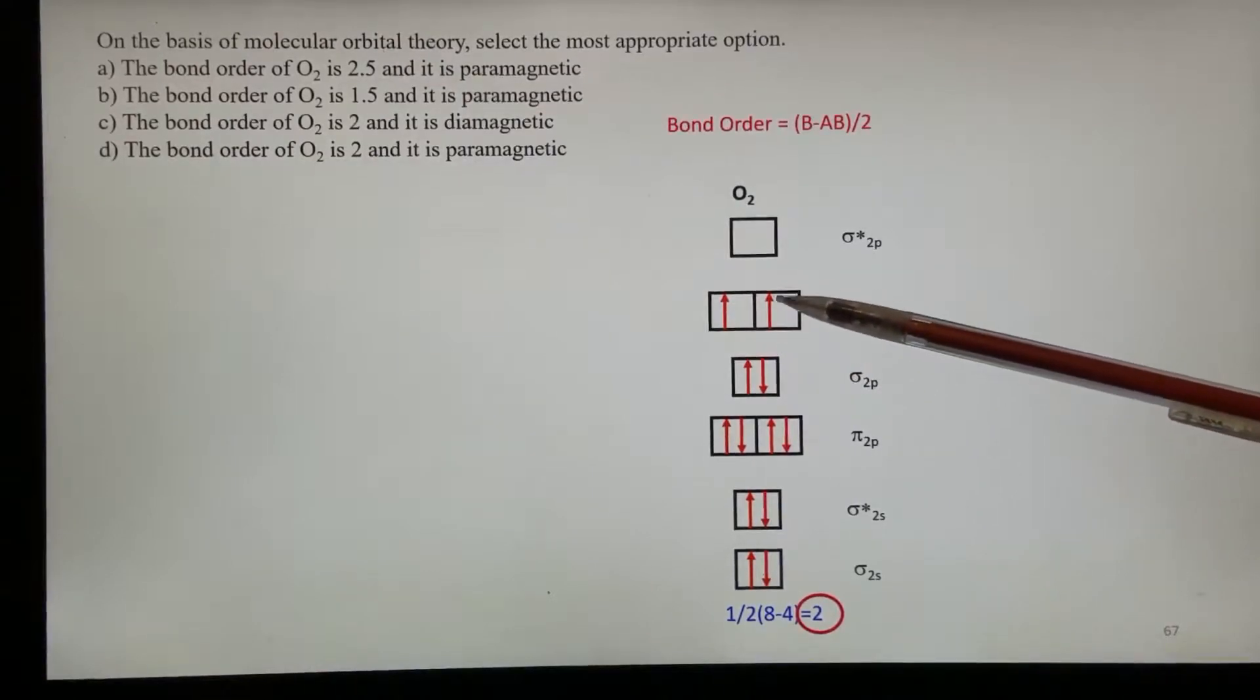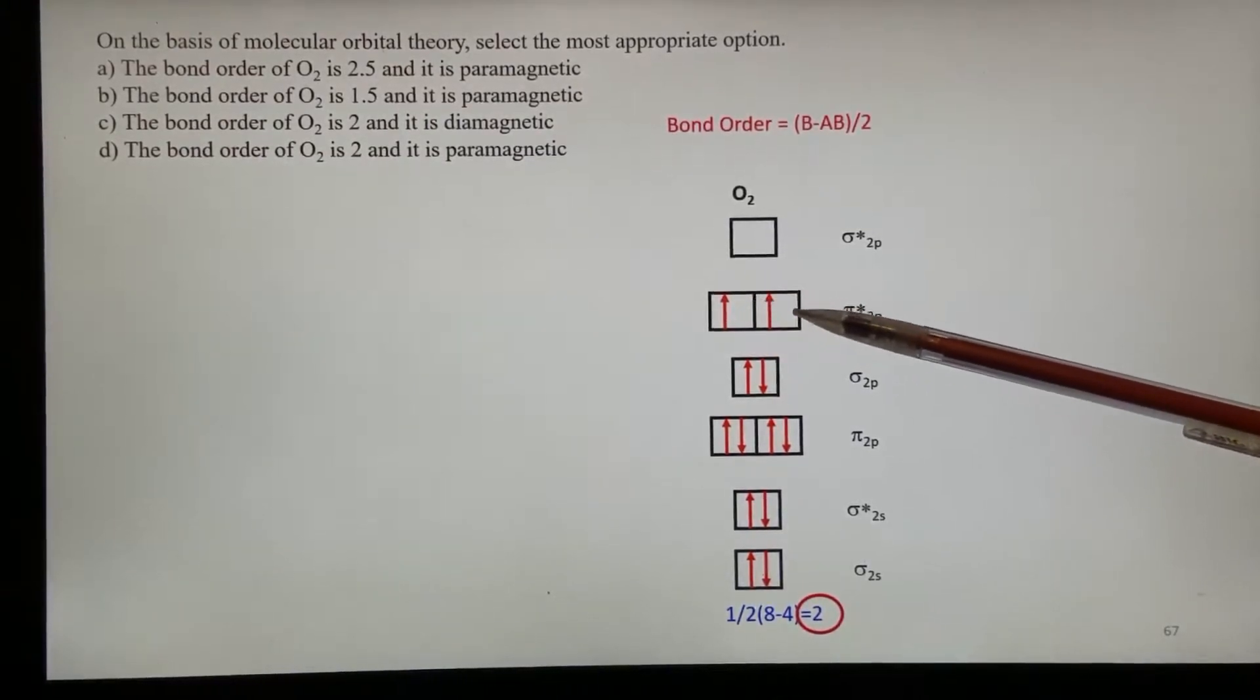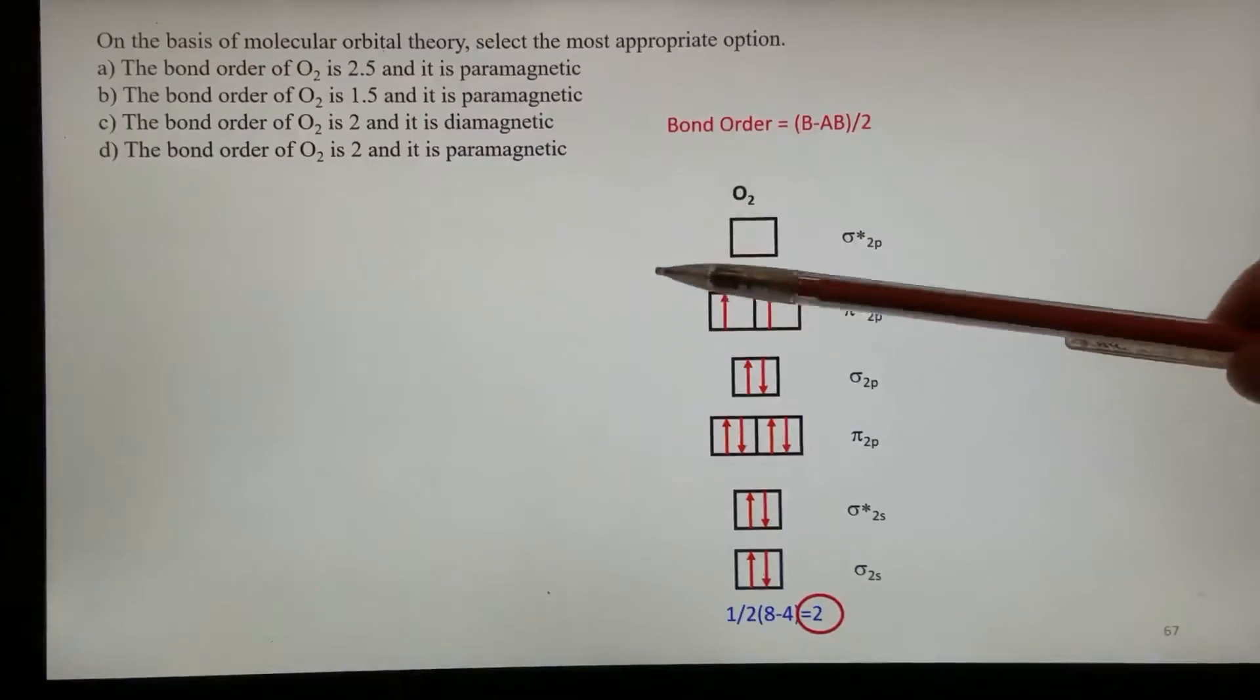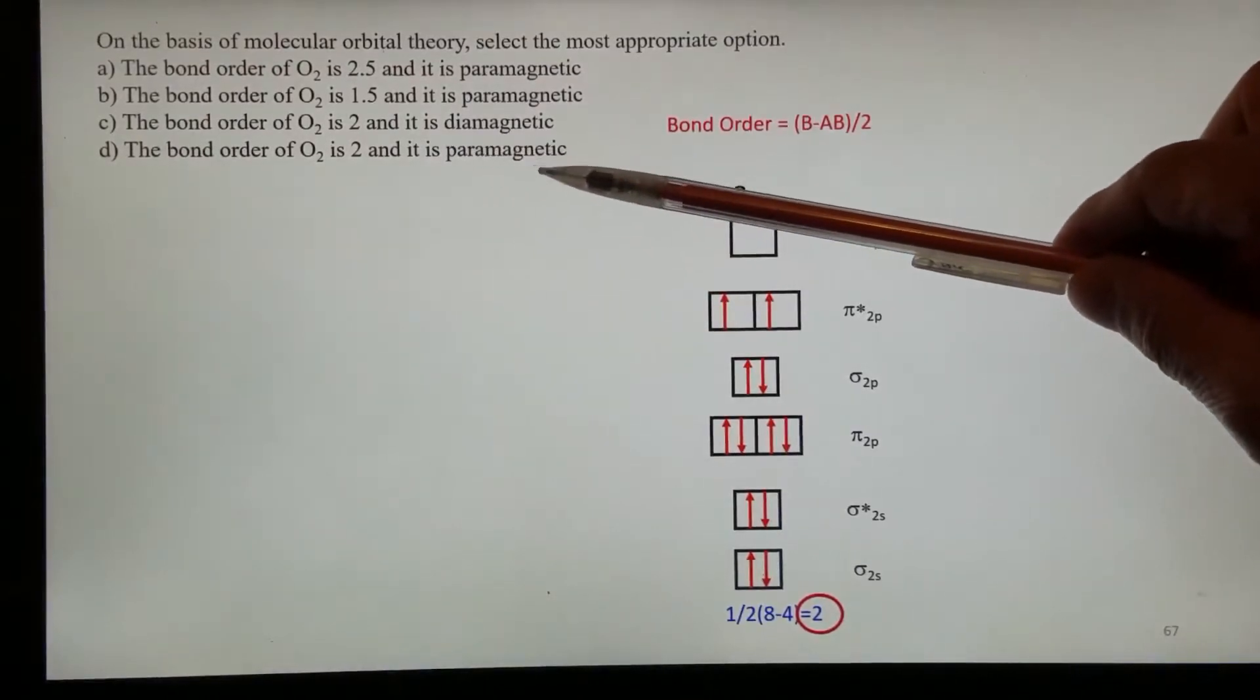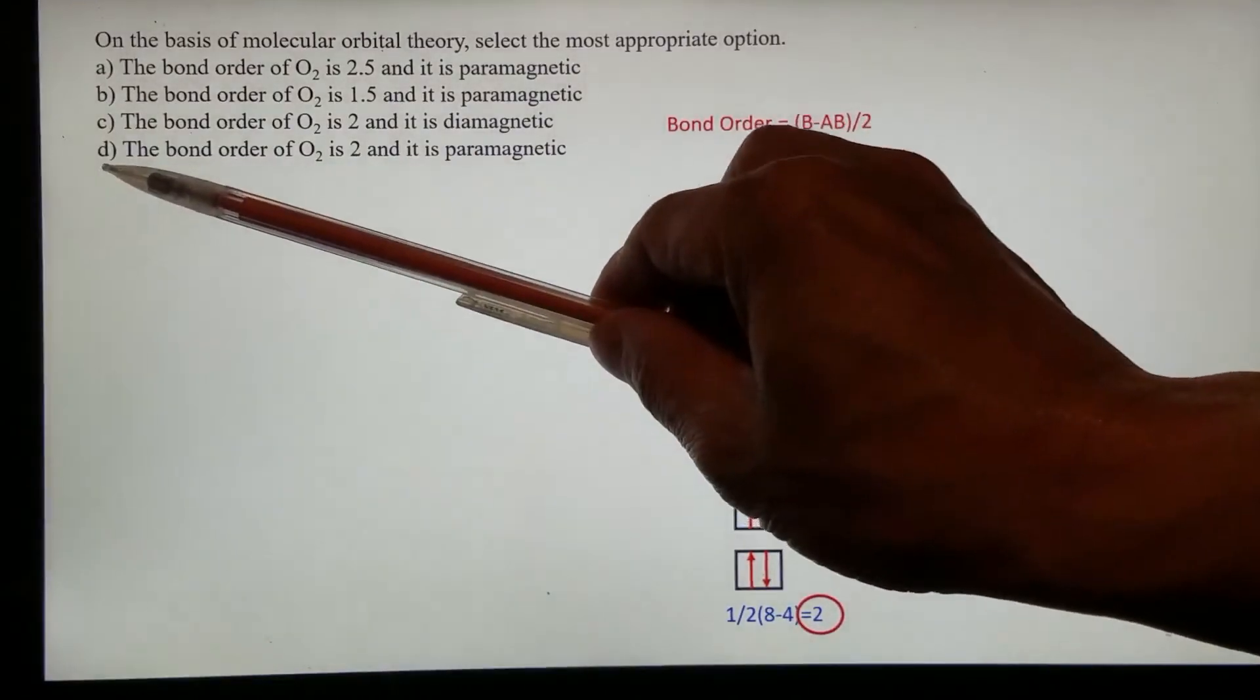We do see unpaired electrons. If there are unpaired electrons, it should be paramagnetic. Therefore, the correct answer should be D.